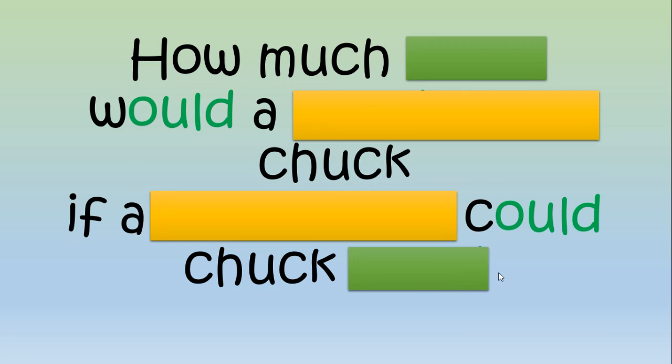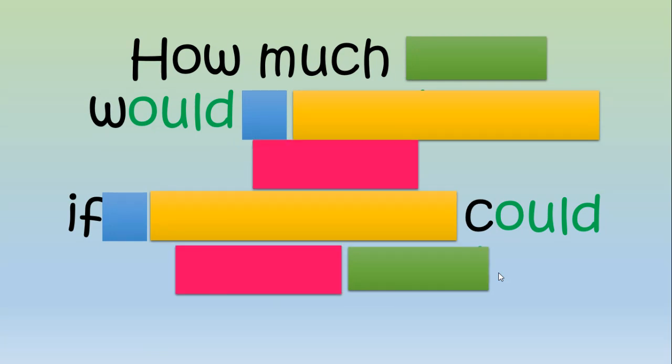Let's say it one more time: how much wood would a woodchuck chuck if a woodchuck could chuck wood. Super! The next word is the article 'a.' Okay, let's say it one more time: how much wood would a woodchuck chuck if a woodchuck could chuck wood. Super! The next word is 'chuck.'